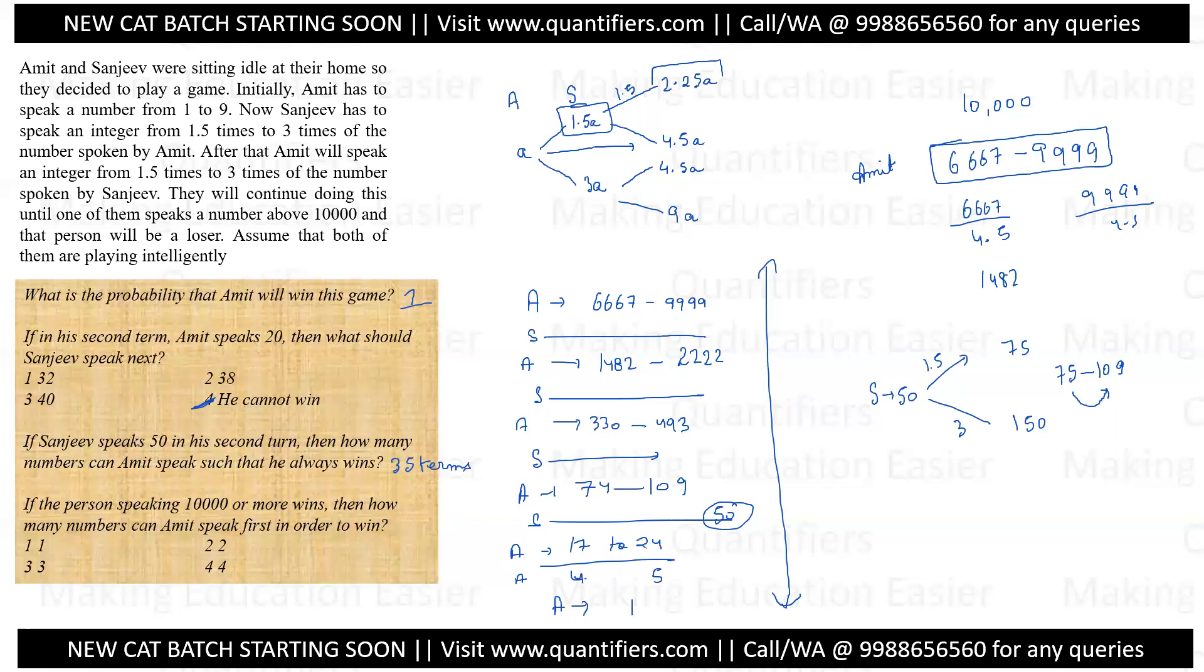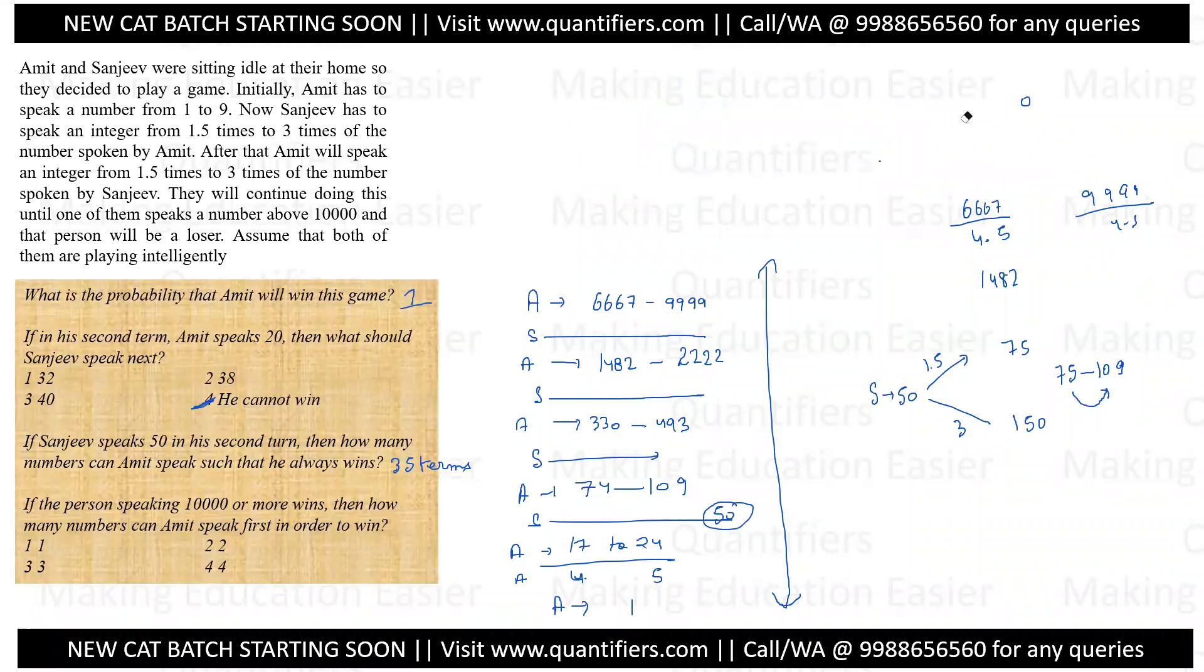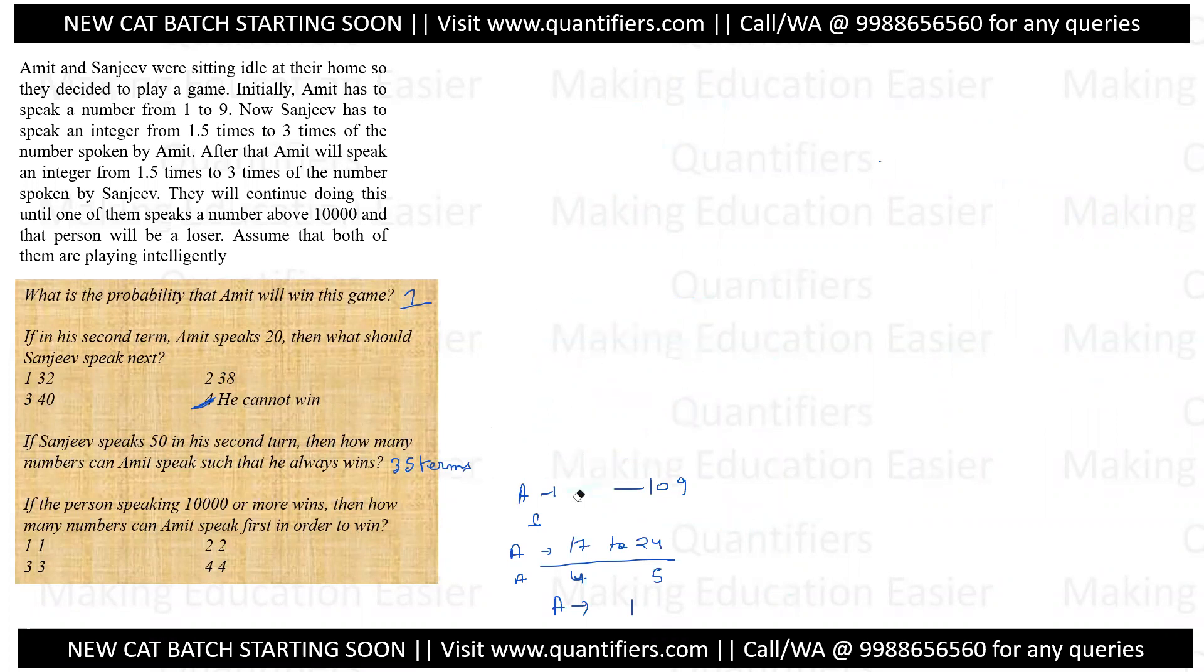Now the last question comes with the twist. But please be very intelligent now. I'll request everyone to just pause the video and try to find the winning range. Tell me the first winning range. Comment in the comment section if you can find the first winning range here. If the person speaking from 10,000 and above is winning, then would Amit want to come to a number closer to this or far away from this? If he speaks 9,000, the other person will simply speak 2 times and win. Which means now Amit's tendency will change. Amit would want to think, what should I speak that even if he does the maximum he can, that is 3 times, he cannot reach 10,000?